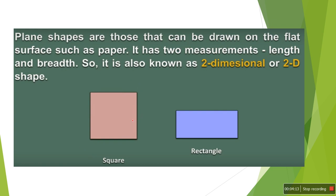In a square, all sides are equal, so you will not find a differentiation between length and breadth. But in a rectangle, you can easily find the length and the width or breadth separately.